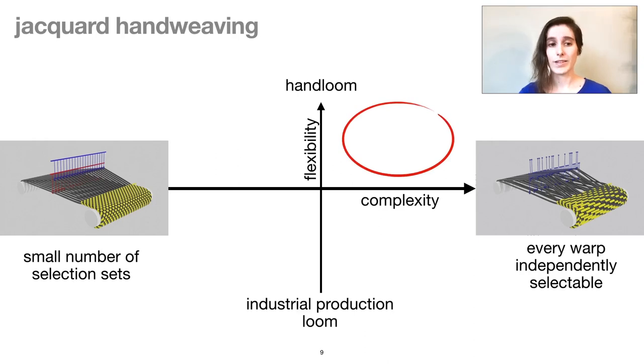Our loom combines the potential complexity of Jacquard's selection plus the flexibility of hand weaving in order to support accessible prototyping and experimentation.